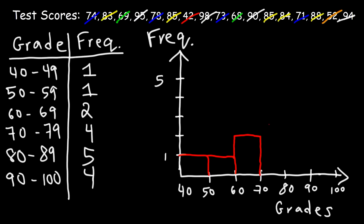And then from 70 to 80, it goes up to 4. And then from 80 to 89, or just under 90, it goes up to 5. And from 90 to 100, it's 4. And so that's how we can construct the histogram for the data that we have here. As you can see, it's very straightforward.